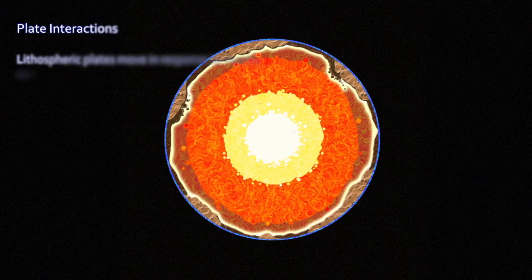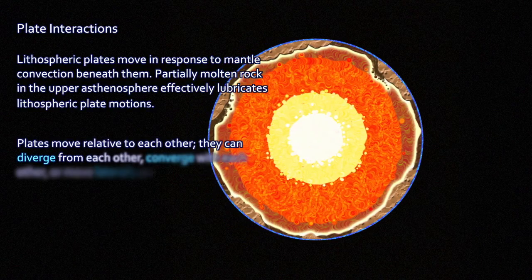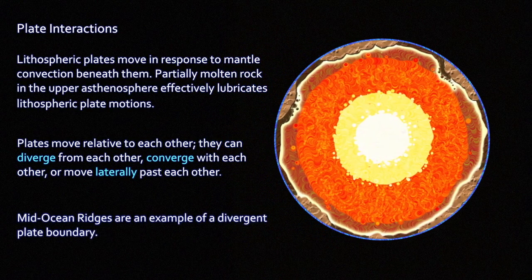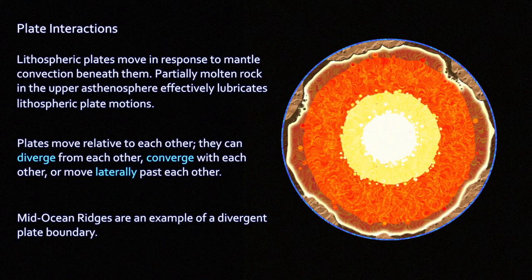At mid-ocean ridges, seafloor spreading is a kind of divergent plate boundary motion. Plates logically can move relative to each other horizontally in only a certain number of ways: they can diverge from each other, they can converge — plates slamming into each other — or they can just move laterally, scraping past each other along the side. All of these happen on earth. Every kind of plate motion that can happen does. And it's all driven by mantle heat flow, mantle convection, and the properties of the rigid lithosphere above the asthenosphere — whether it's ocean crust or continental crust, and how they behave relative to each other.